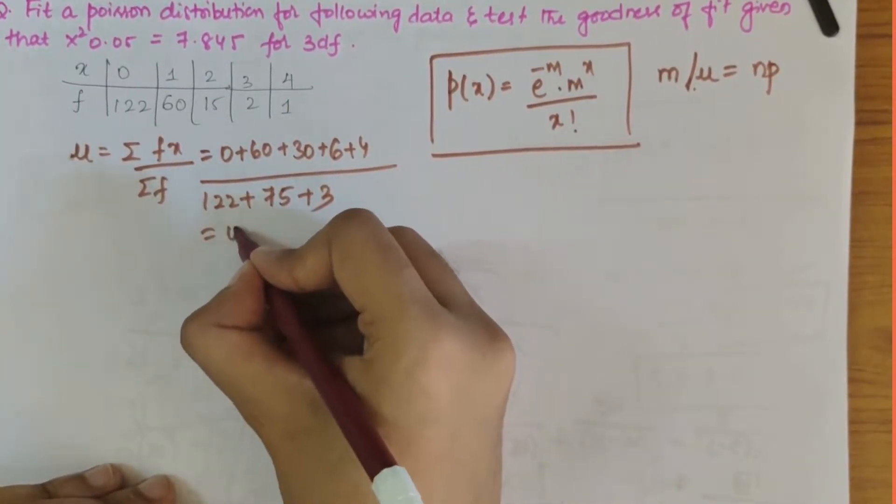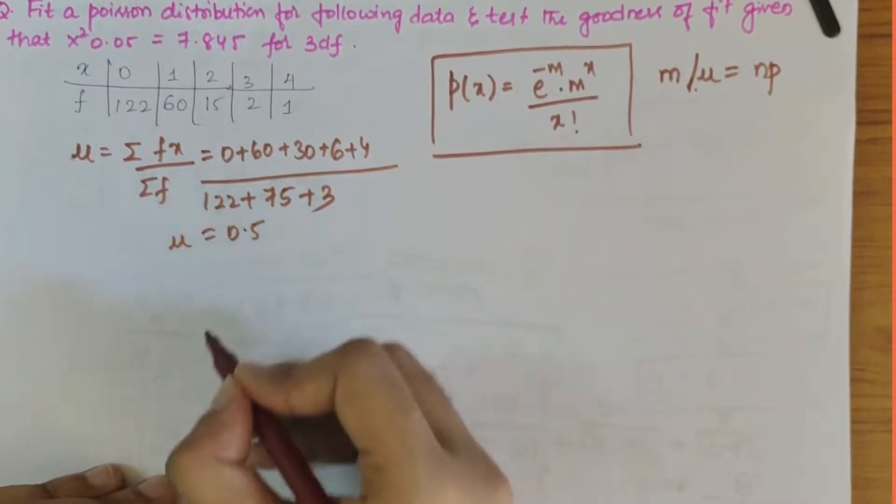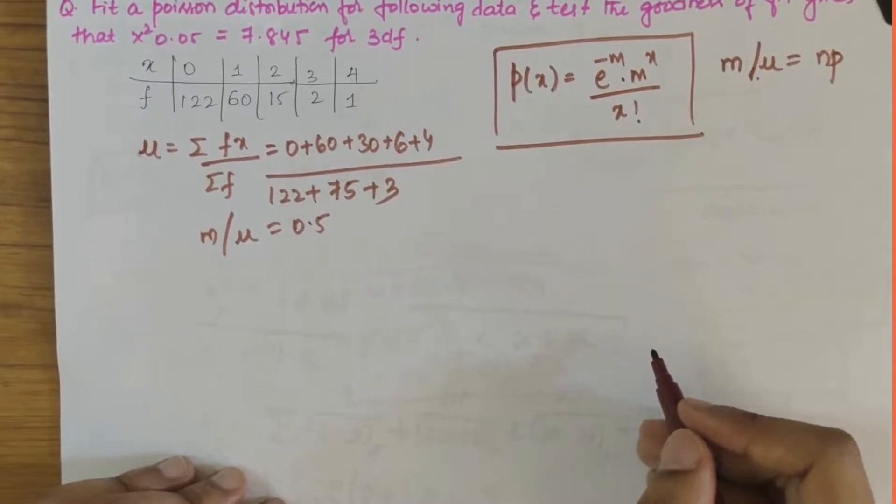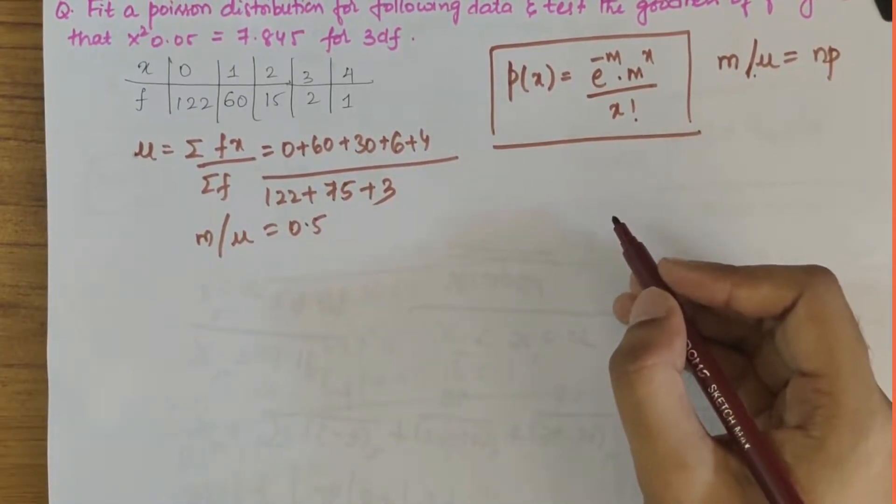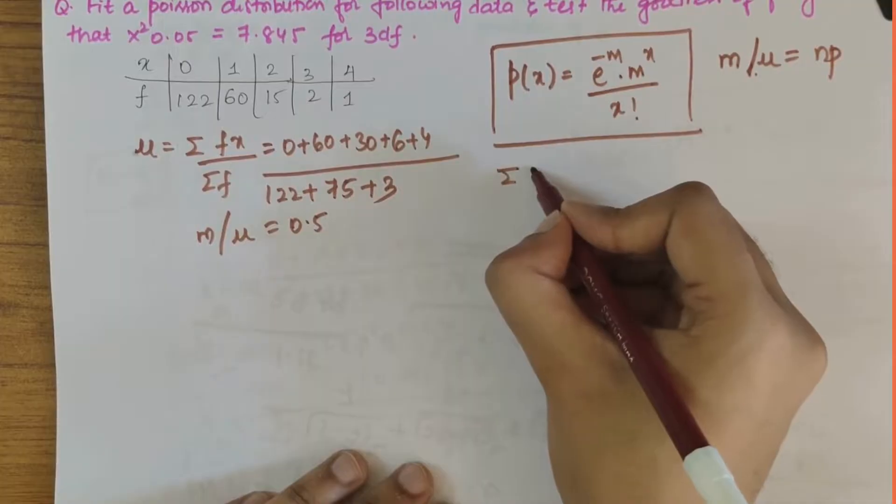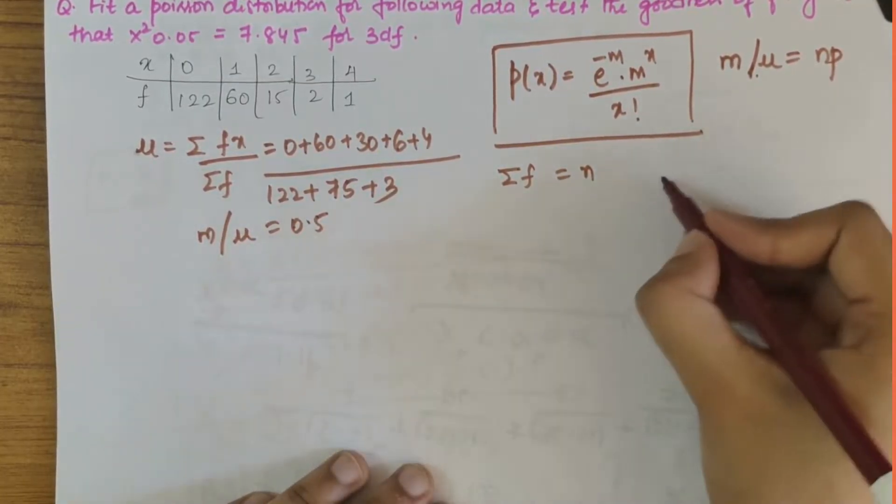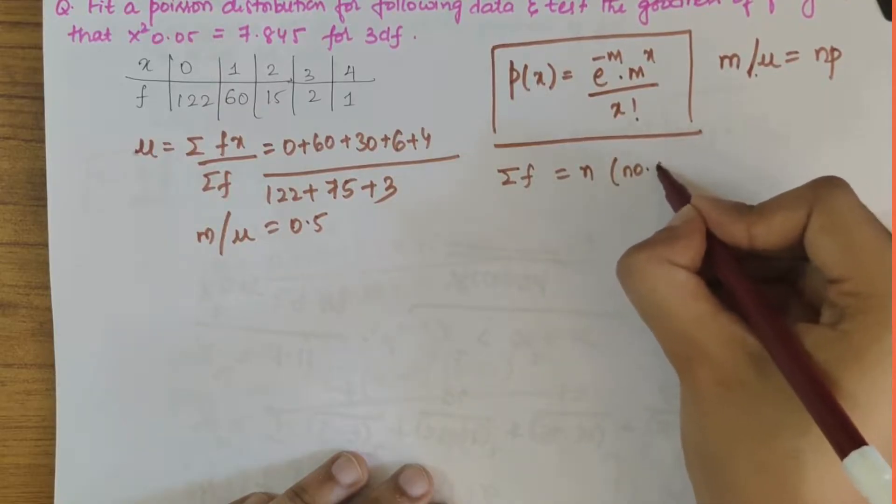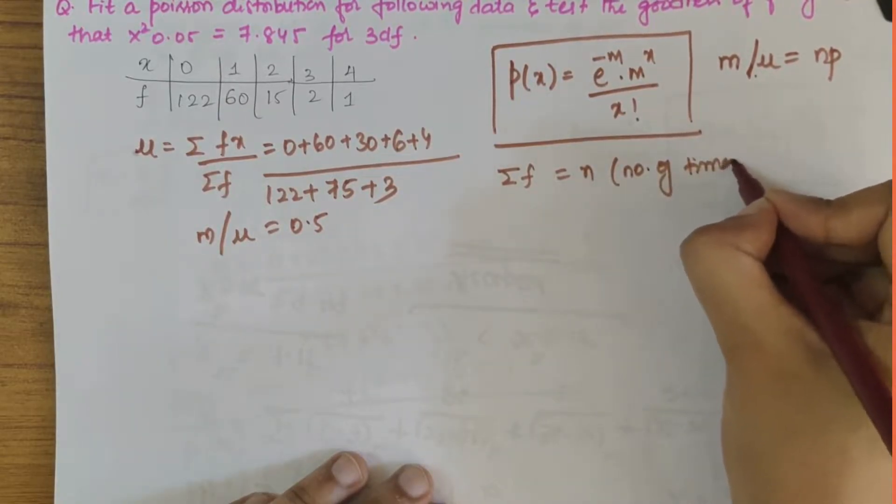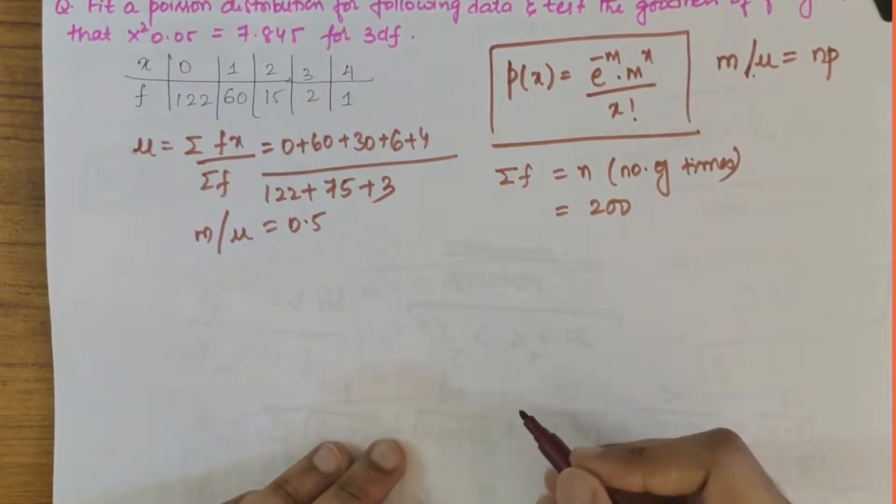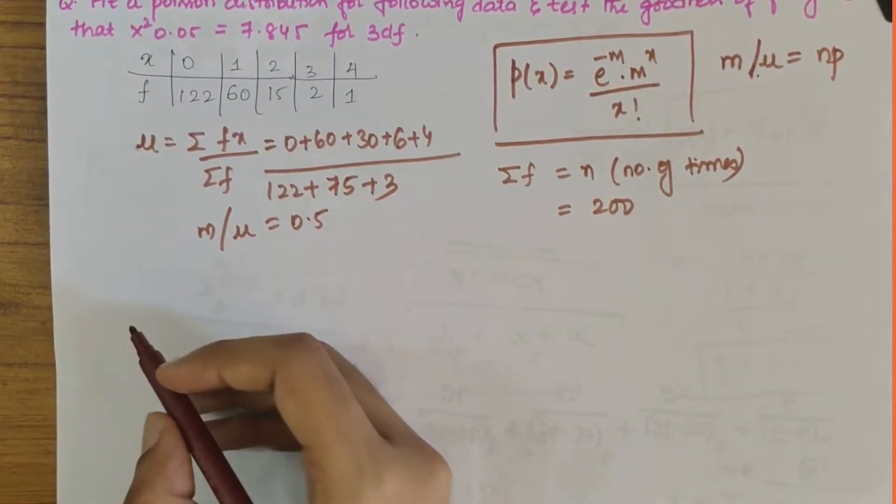If you solve this we get the value as 0.5, that is mu or m. Next step, we have to calculate summation of f which would be equal to n, that is the number of times that's being repeated. That is 200 if you add this, you'll get 200, so we'll keep this.